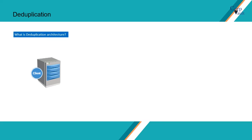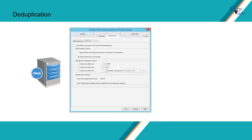Now let's look at the DeDuplication architecture. The DeDuplication block size is set at the storage policy level. On our storage policy it is set at 128 kilobytes.